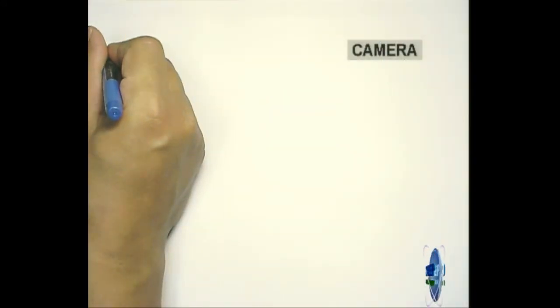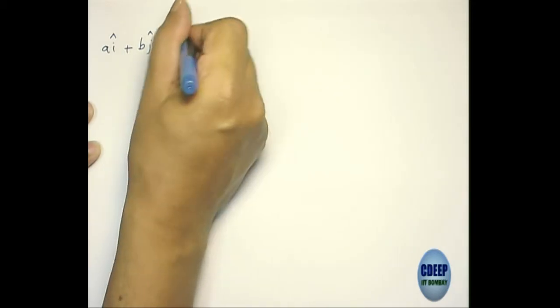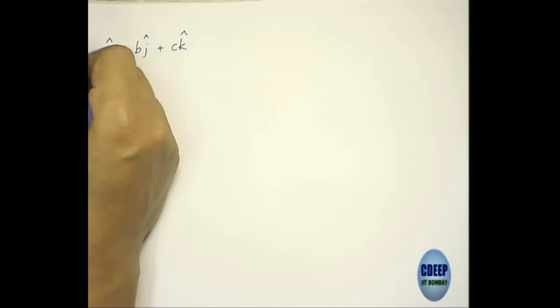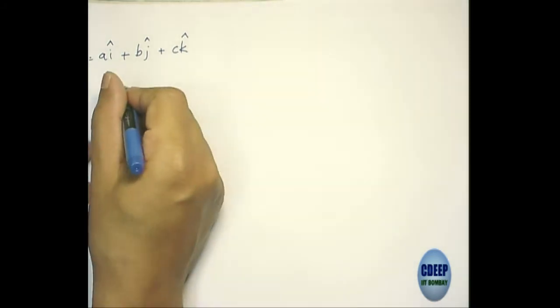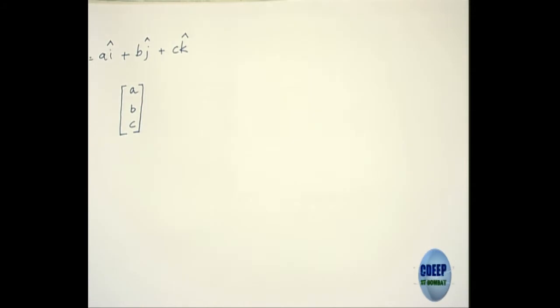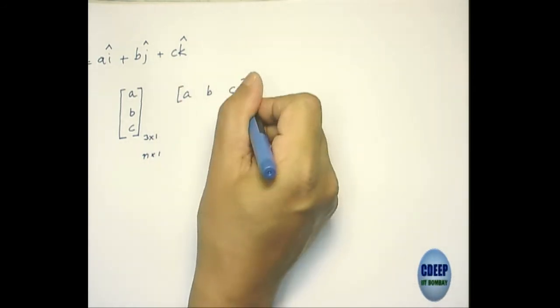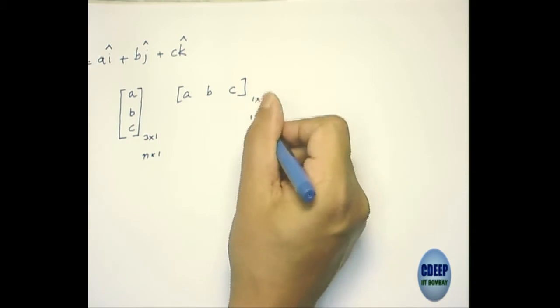Let me call it a vector r. Is this clear to everyone? i, j, k are the unit vectors in the x, y, z direction. I can write this as a slightly different kind of vector. A vector in matrix algebra, as you know, means a column matrix or a row matrix — so this is 3 by 1, or in general n by 1. I could also write it as a row vector, 1 by 3, or in general 1 by n if I have more elements.